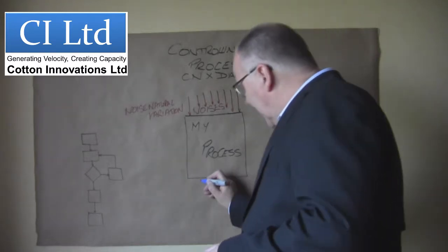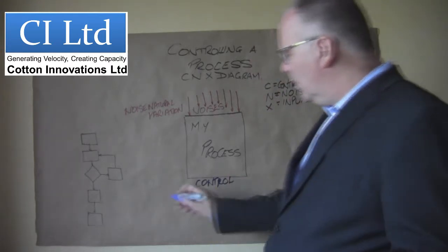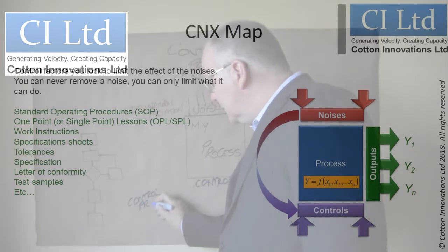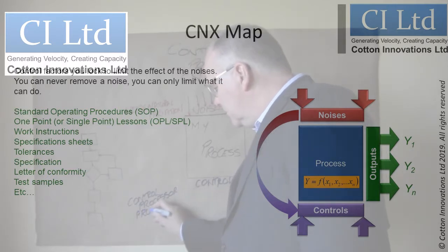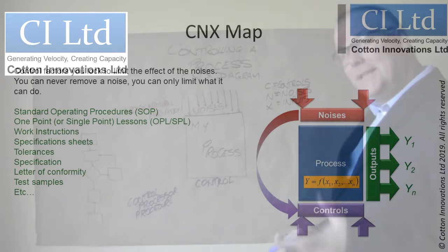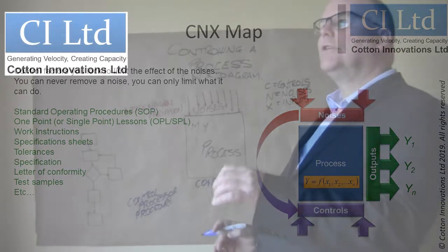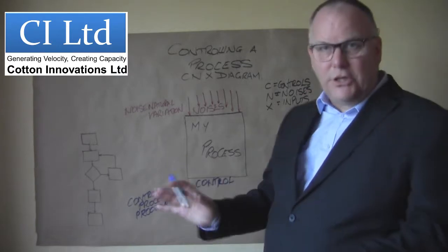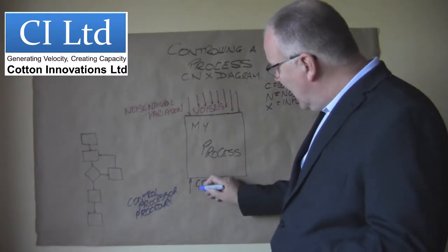Once I've mapped all of those noises for this process — and one might want to do it step by step — for each one of these steps I create a CNX map and I list every one of my noises. What I then have to do is place a control. A control is a process or a procedure that we use to contain the noise. Note the word 'contain' — we can never remove a noise. You can never stop humidity, temperature difference, wind direction, or batch-to-batch variation. What you can do is contain it with specs, with conditioning rooms, with procedures and processes that you put in place. So for every noise there has to be a control.